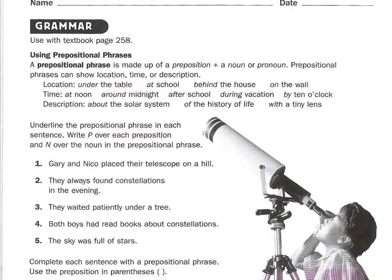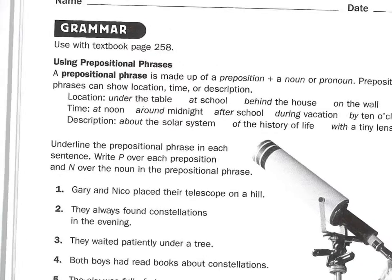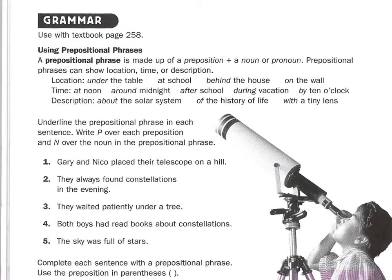We're looking in Shining Star B, Unit 6, Part 2, grammar exercises in the workbook that go along with textbook page 258 — using prepositional phrases. A prepositional phrase is made up of a preposition — remember the root word: a preposition is 'position,' where. A prepositional phrase is made up of a preposition plus a noun or pronoun. Prepositional phrases can show location — where — time — when — or description.